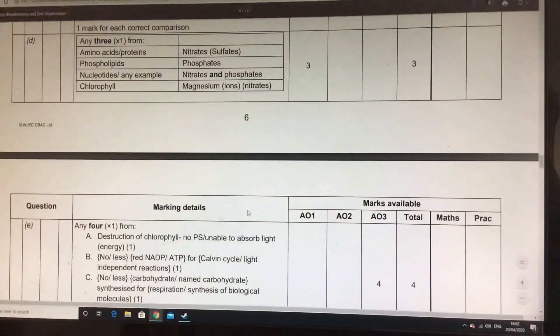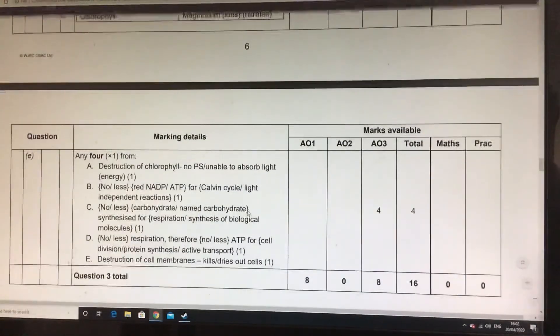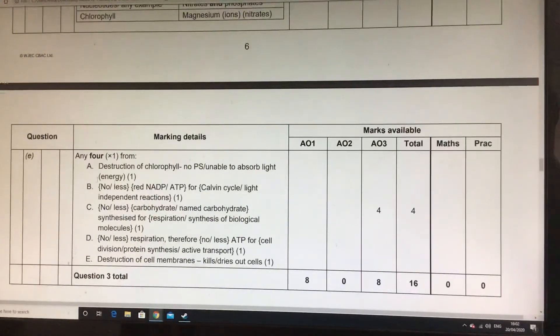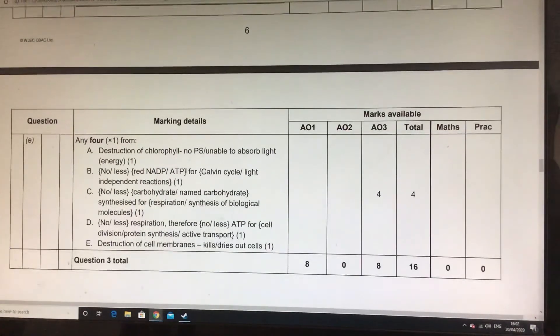And let's have a look at this because it does include also the bleaching effect of it as well. So destruction of the chlorophyll means that the photosystem cannot absorb light, means less NADP and ATP for the light independent or for the Calvin cycle.